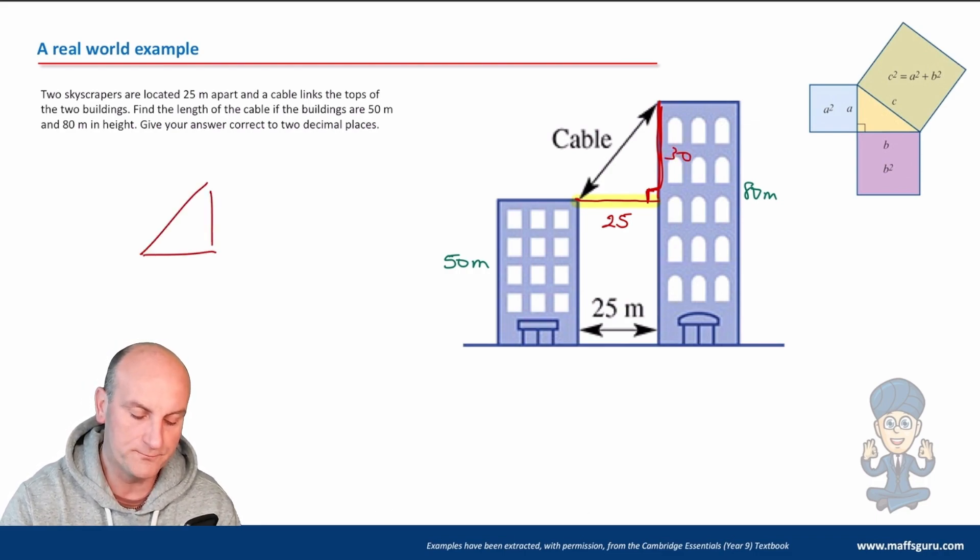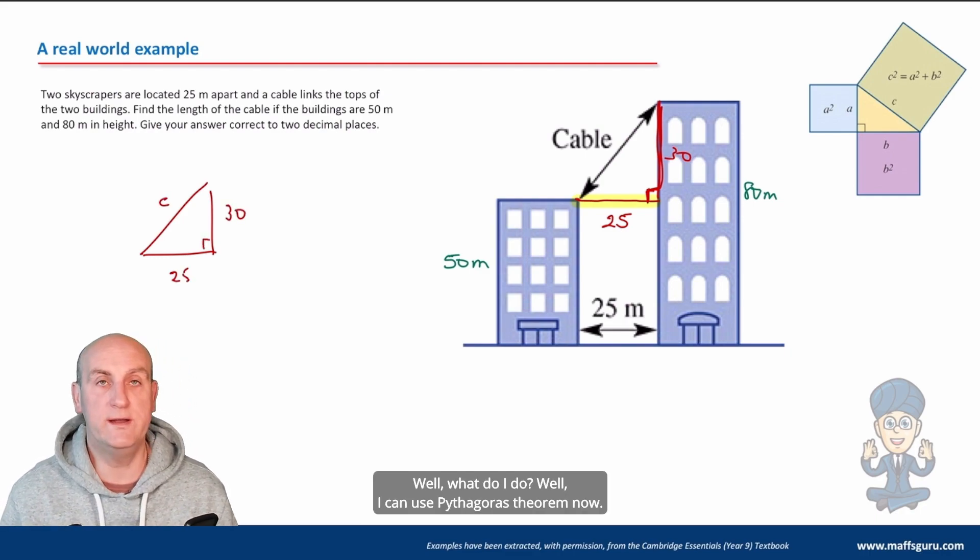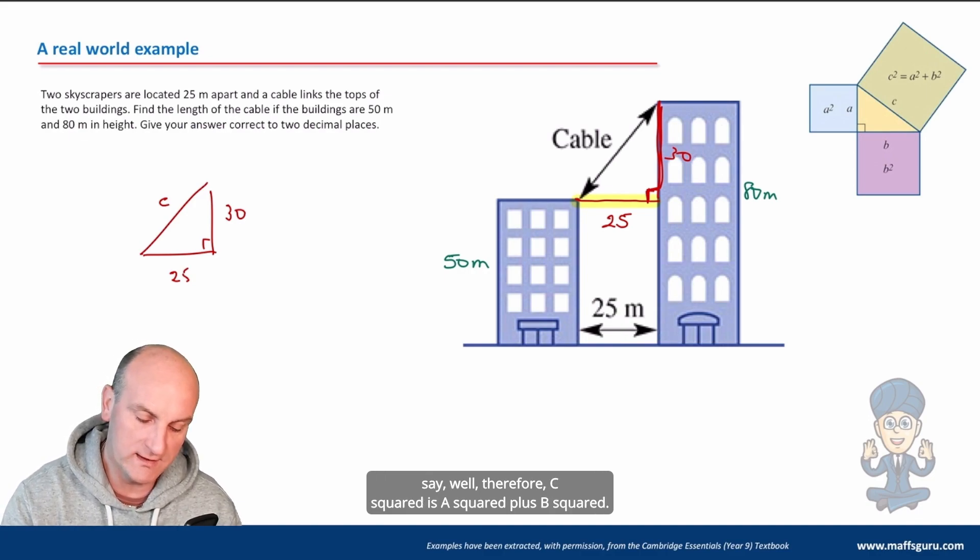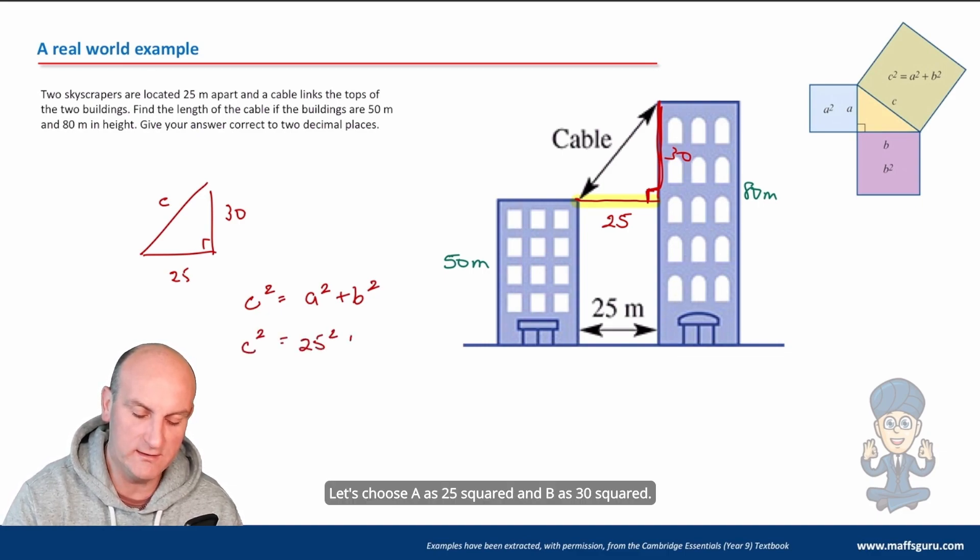So there we go. I've got a right angle triangle. I've got 25, I've got 30, and now I'm going to call that C. What do I do? Well, I can use Pythagoras' theorem now. It's not a nice, easy 3, 4, 5 triangle. So what I'm now going to say is C squared is A squared plus B squared. C squared, we don't know. We're trying to find it. Let's choose A is 25 squared and B is 30 squared.